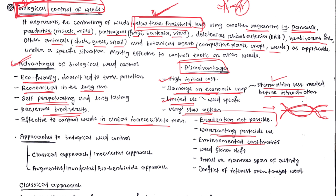Other limitations include environmental constraints — in some environments, bio-control agents cannot survive. There is also weed flora shift: if some weeds are controlled, another weed species may emerge. Additionally, insects have a short lifespan, giving them a small or narrow span of activity, and there may be conflicts of interest over the target weed for introduction of bio-herbicides.